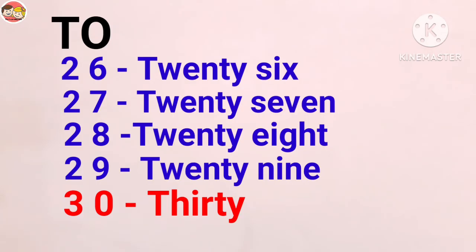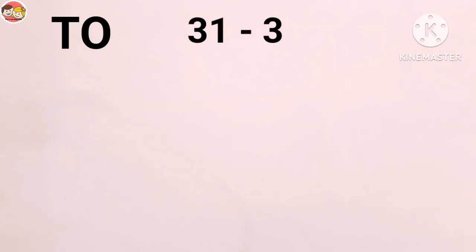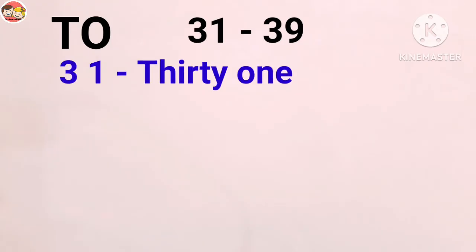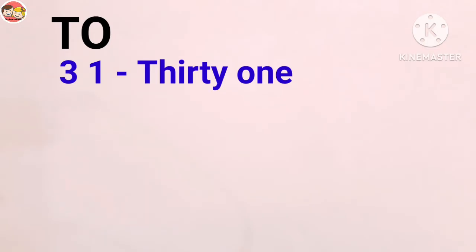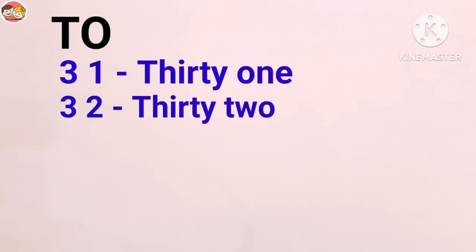Next, numbers 31 to 39. The same pattern is followed here: T-H-I-R-T-Y (30) plus O-N-E (1) equals 31. Thirty plus T-W-O (2) equals 32: T-H-I-R-T-Y T-W-O, 32.